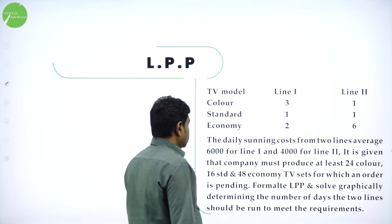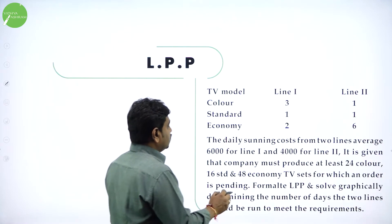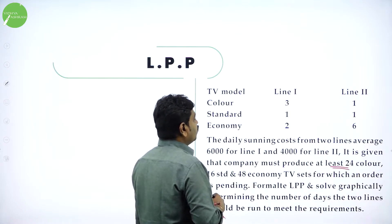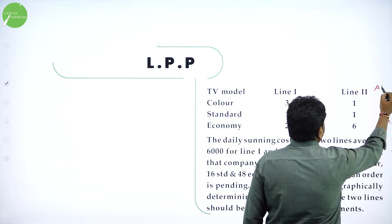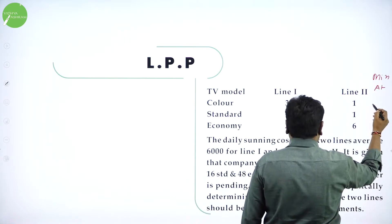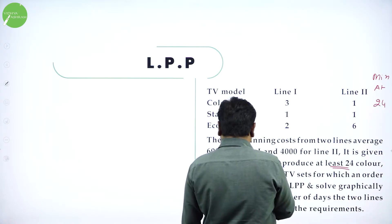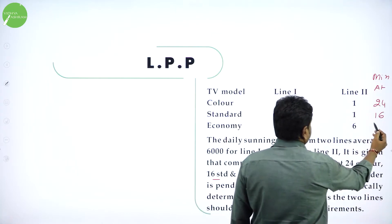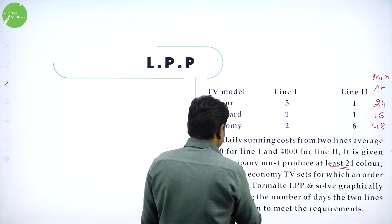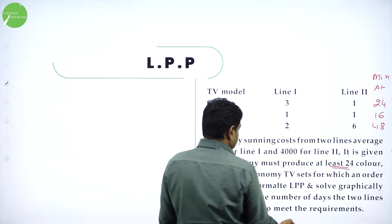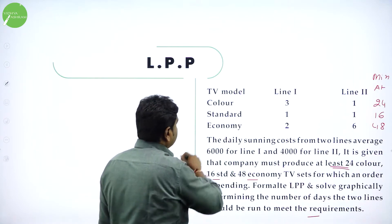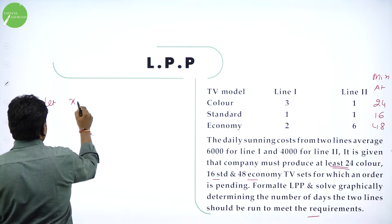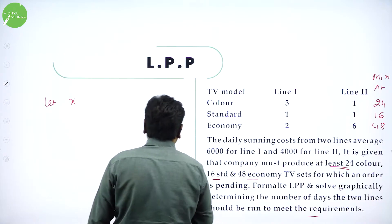Formulate the LPP and solve graphically. The problem states they must produce at least — meaning that much or more. The minimum requirement for color is 24, for standard is 16, and for economy is 48. We need to determine the LPP for two lines so that they meet the requirements. Let X be the number of days Line 1 operates and Y be the number of days Line 2 operates.